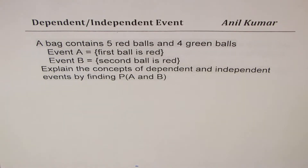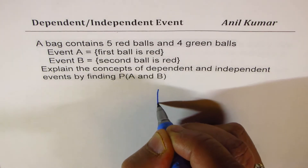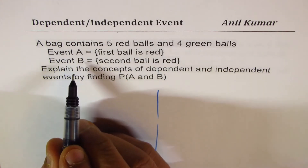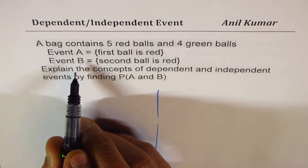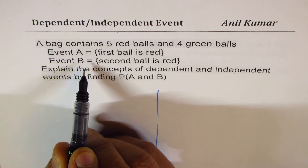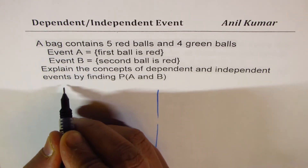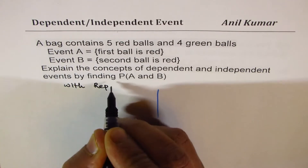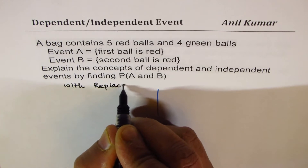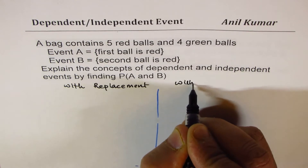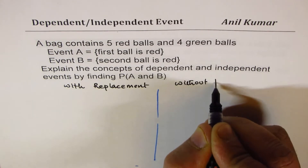This is a very important question and it helps us understand the concept. When we select a ball randomly one after the other, we look into two cases: with replacement and without replacement.